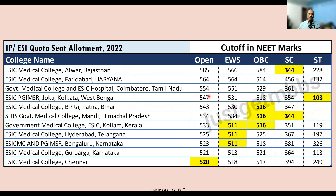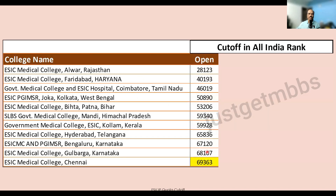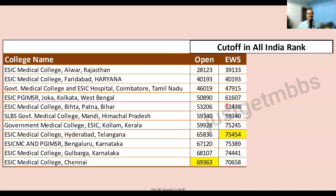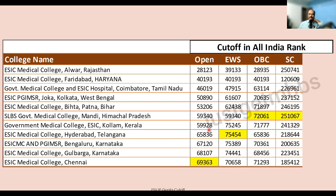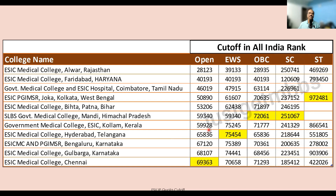Now let us look at the cutoff in terms of All India ranks. The closing rank for the open category was around 70,000. For EWS it was slightly lower at 75,000, and for OBC it was 72,000. So if you are in the top 75,000 ranks, you have a good chance whether you are OBC, EWS, or open category. SC closed at All India rank 2,51,000 and ST category closed at almost 10,00,000 All India rank.